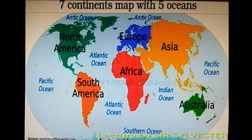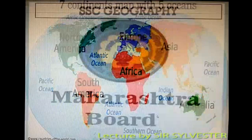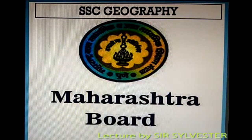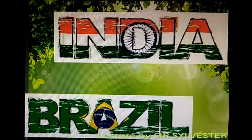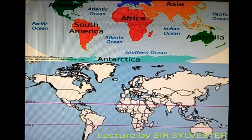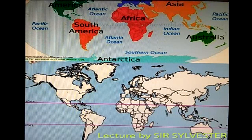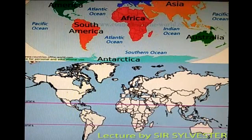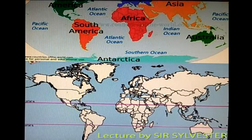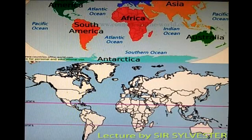The Indian Ocean is the only ocean to be named after the country India, and we should really be proud of it. This year, in your SSE for Maharashtra board Geography, you will be studying about two countries: India and Brazil. Brazil is located in the South American continent, and India is located in the continent Asia.